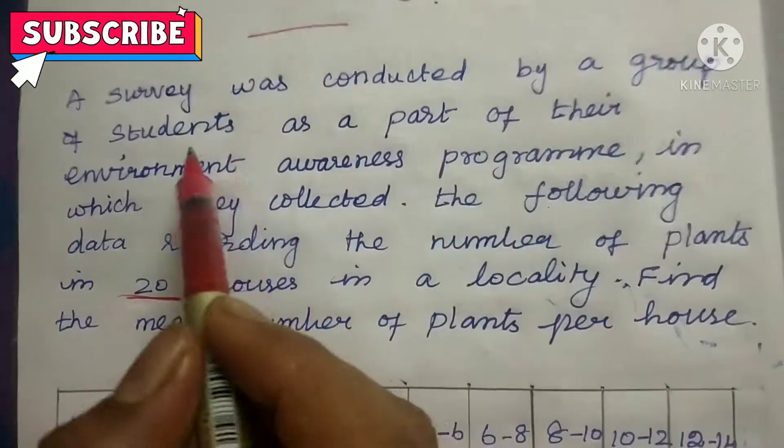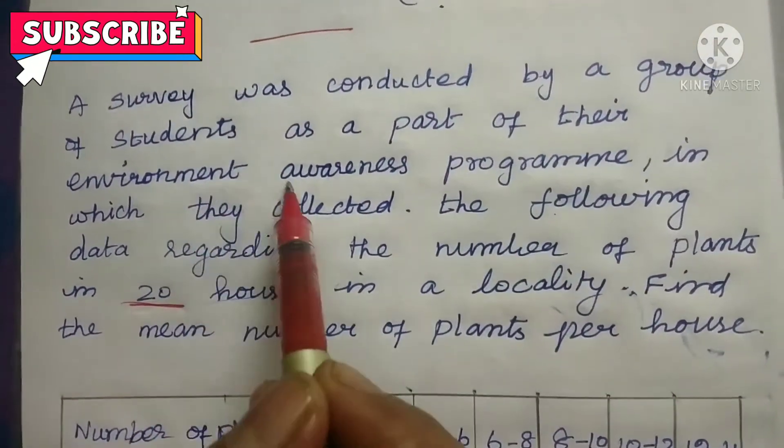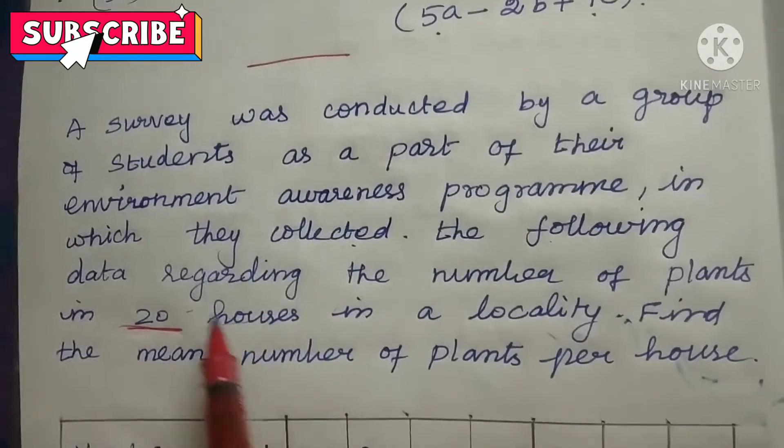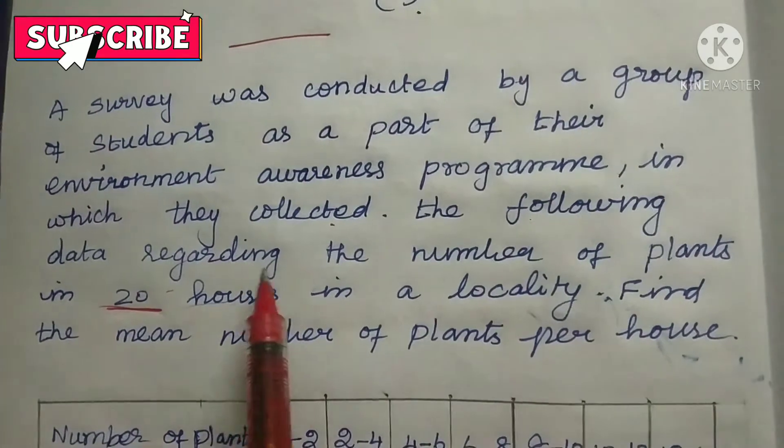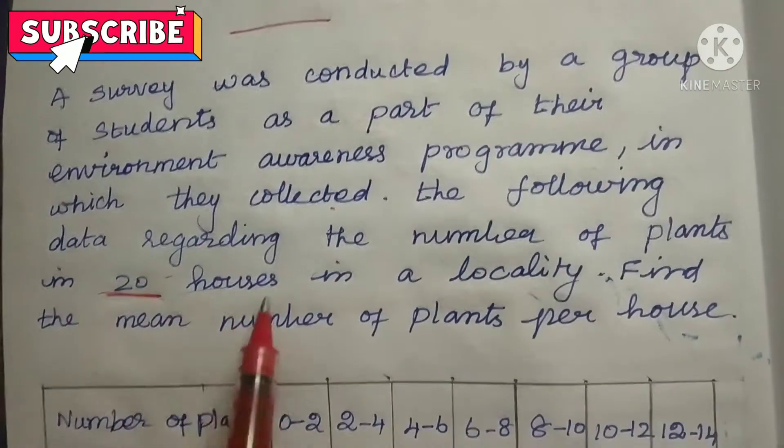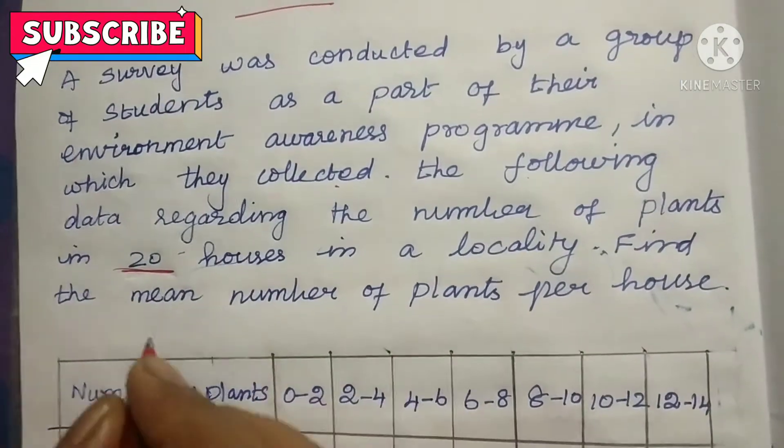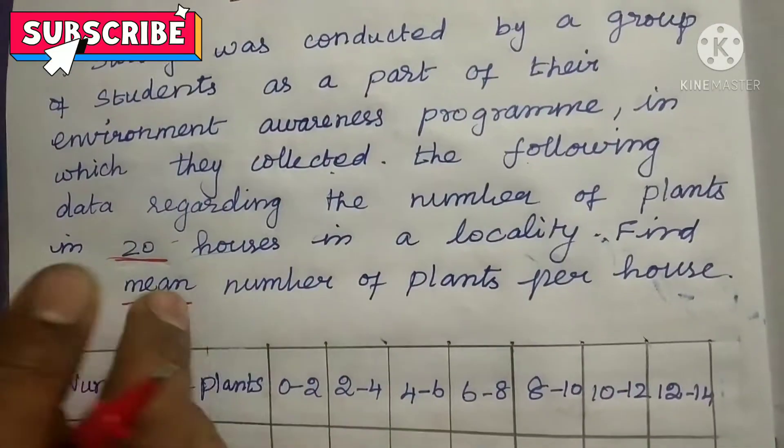A survey was conducted by a group of students as a part of their environment awareness programme in which they collected the following data regarding the number of plants in 20 houses in a locality. Find the mean number of plants per house.